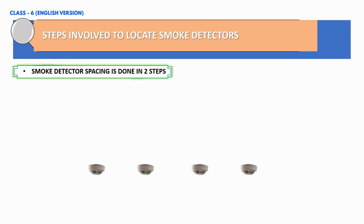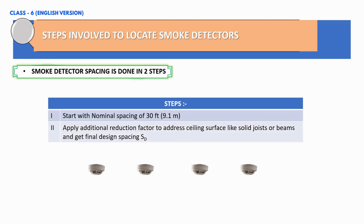Spacing of the detectors will be done in two steps. The standard spacing for smoke detectors is based on the premise that they should not be installed more than 30 feet or 9.1 meters apart. Detector performance can also be affected based on airflow, ventilation, and other environmental factors, which should be taken into consideration. Additionally, we need to apply an additional reduction factor to address ceiling surfaces like solid joists or beams to get the final design spacing SD.